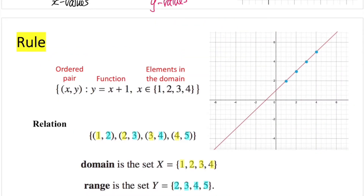When it comes to writing the rule for a relation, we have a specific structure. You write your ordered pair first, then write your function, and finally you write your x values and their domain. So this is: x is an element of the set {1, 2, 3, 4}, meaning x is an element in this given domain. Altogether, you put everything in curly brackets to represent the relation.